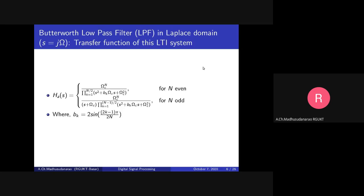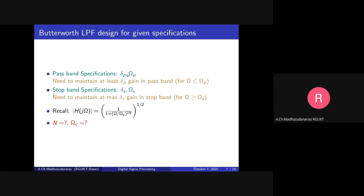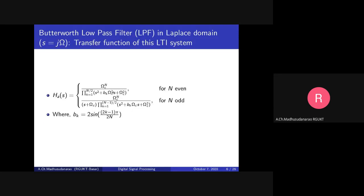Let's recap analog filter design. This transfer function corresponds to a Butterworth low-pass filter. H_a(s) is the analog low-pass filter of any order. Omega_c is the 3dB cutoff frequency. The specifications for the analog low-pass filter: delta_p corresponds to the minimum required passband gain, omega_p is the passband cutoff frequency, delta_s is the maximum allowed stopband gain, and omega_s is the stopband cutoff frequency.